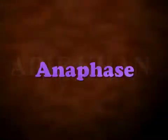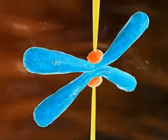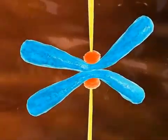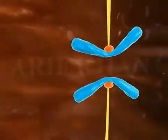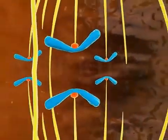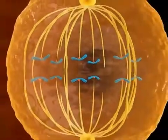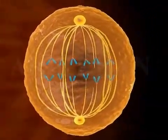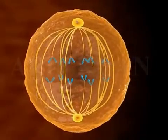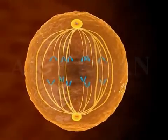Anaphase. During anaphase, the sister chromatids separate at the kinetochores and the daughter chromosomes, along with the divided centromeres, move towards the opposite poles as the microtubules shorten. The poles of the spindle also move apart and help to separate the chromosomes.